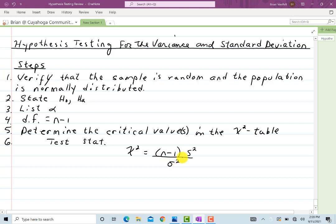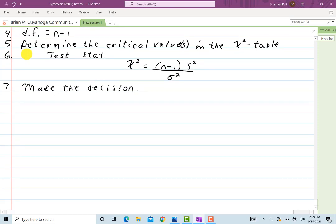Of course, s will be the sample standard deviation. Sigma will be the proposed population standard deviation and then make the decision. All right, let's do some examples to show how this works. You'll see the setup is just like anything else, all the other ones we did except the details are a little bit different.